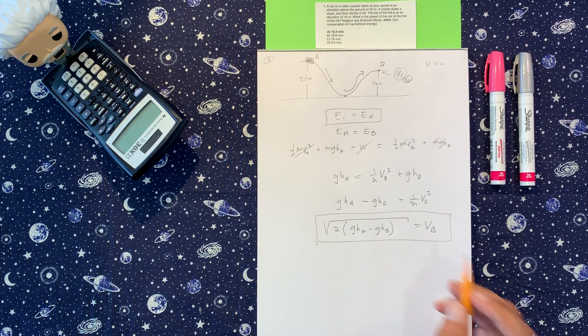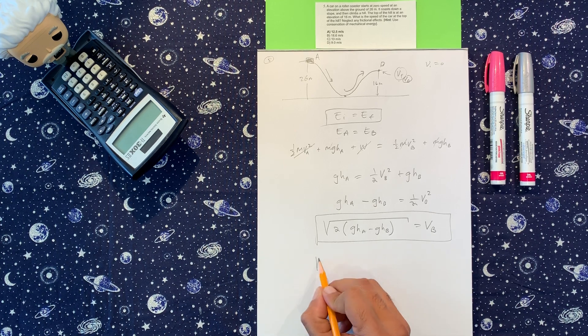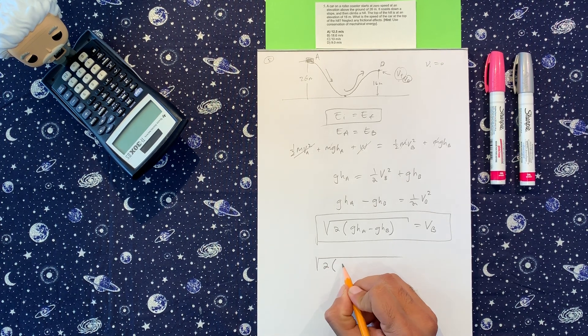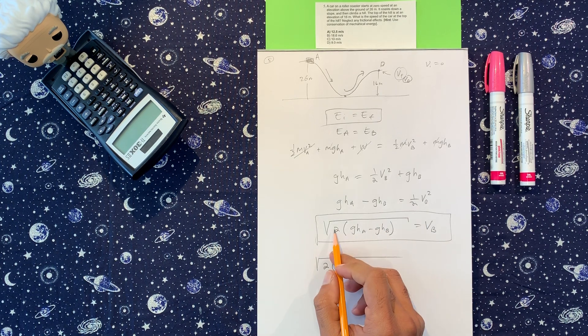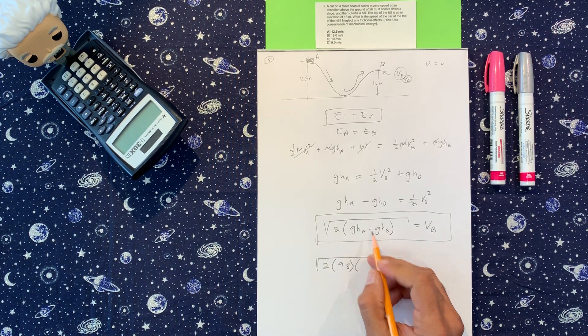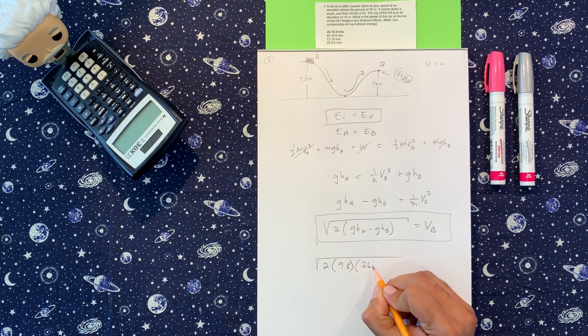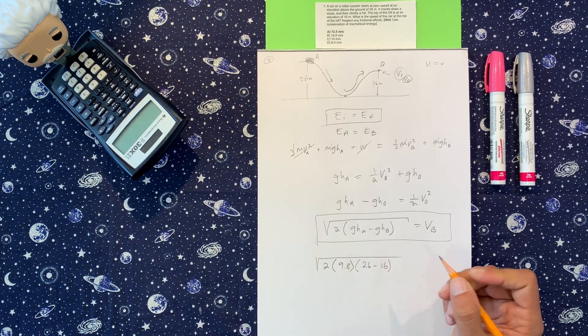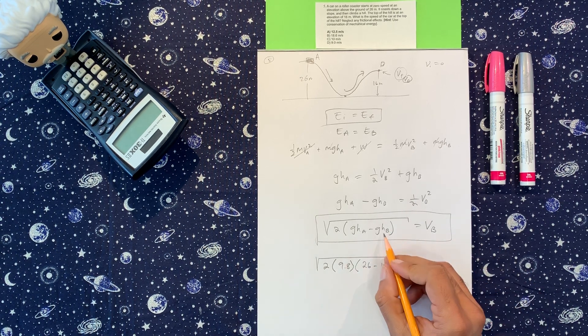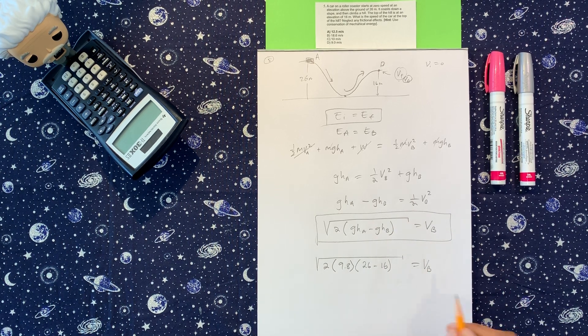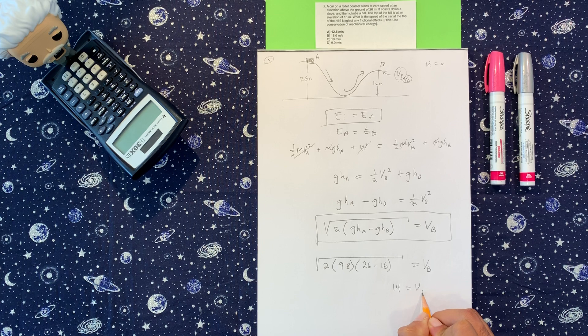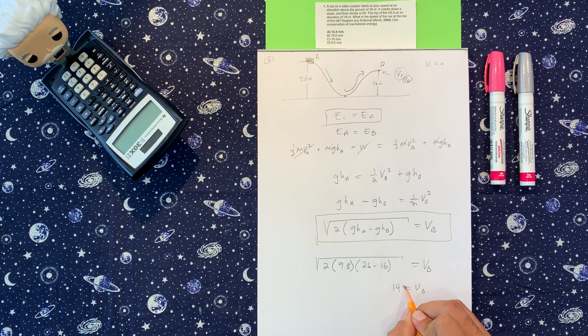Plugging in the numbers, I realized a little problem here, something you guys should be aware of. So two, we got 9.8, I'm going to take out the gravity term, so I'm just going to have hA which is 26 minus 16, which is height B. And then that all is going to equal 14 meters per second.